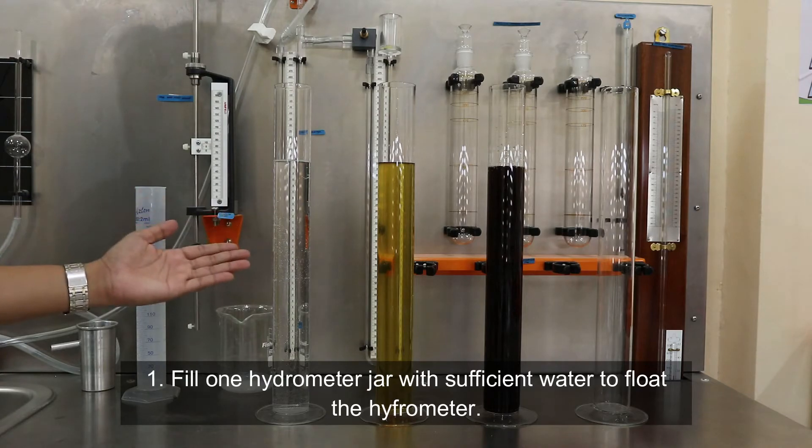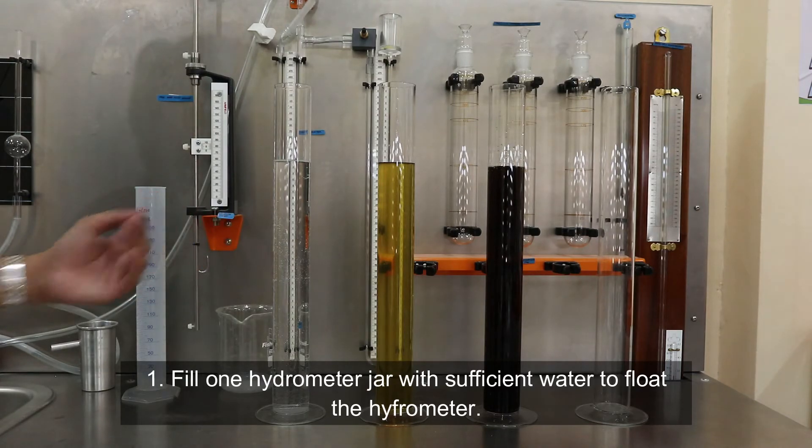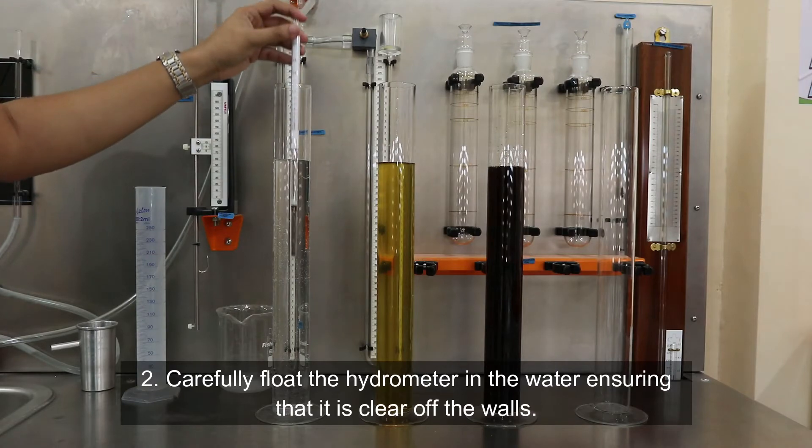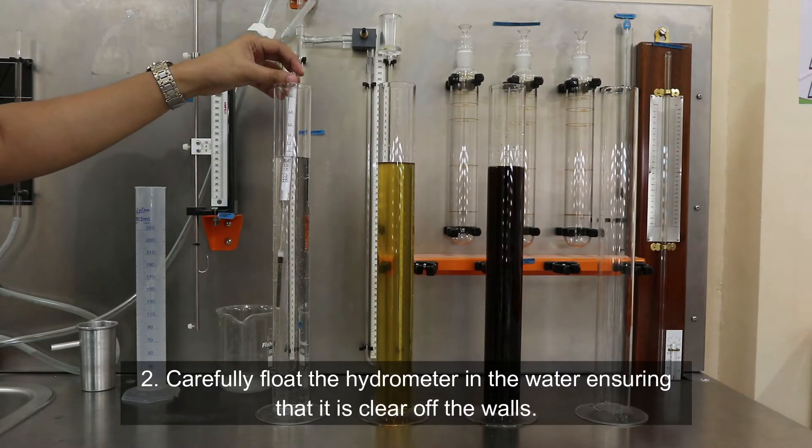First, fill one hydrometer jar with sufficient water to float the hydrometer. Second, carefully float the hydrometer in the water ensuring that it is clear off the walls.